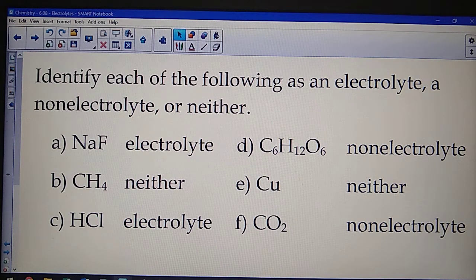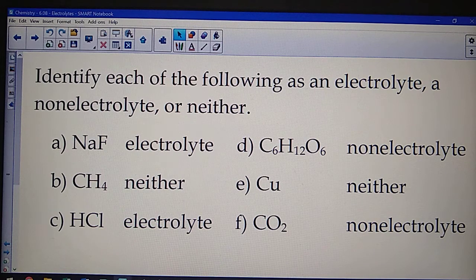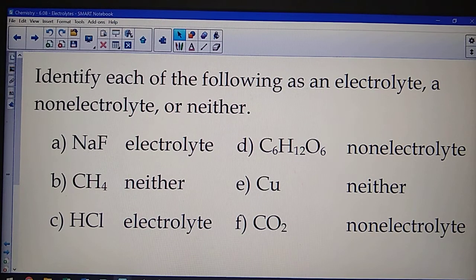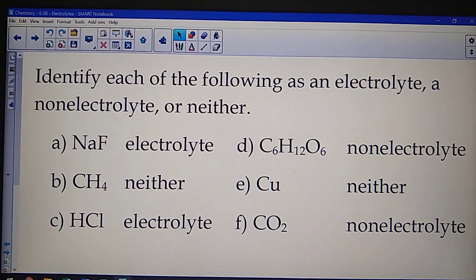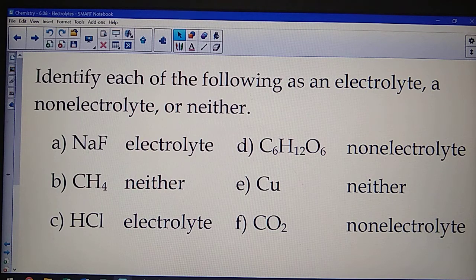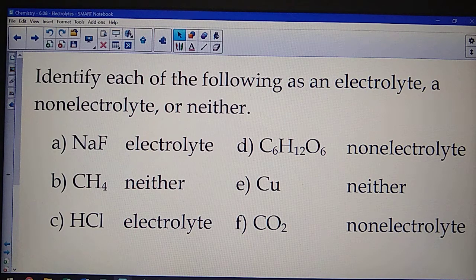C, hydrochloric acid is an acid. Acids are electrolytes. In fact, hydrochloric acid is the example I commonly use for a strong acid. D, glucose. Glucose does dissolve in water. It is polar. However, it is covalent, and therefore a non-electrolyte. It will dissolve, but it won't break up into ions.